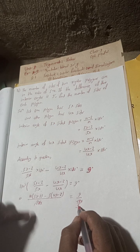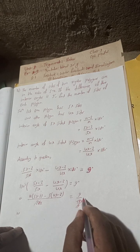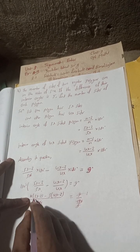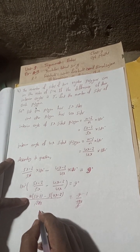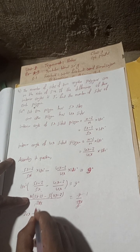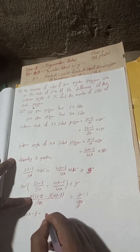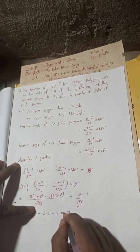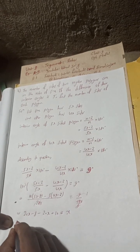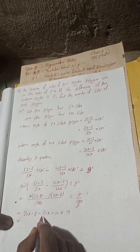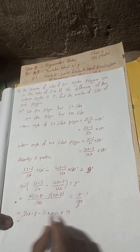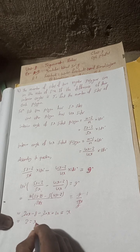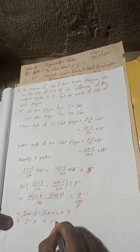Expanding: 20x − 8 − 20x + 10 = x. The 20x terms cancel, leaving −8 + 10 = 2. So 2 = x, which implies x = 2.